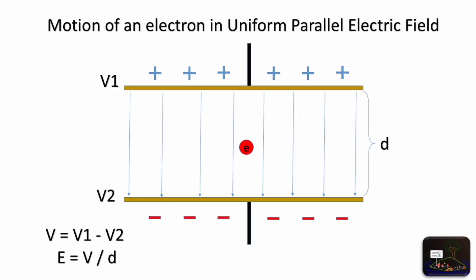First case: uniform parallel electric field. A uniform parallel electric field is created using two metallic parallel plates kept at two potentials V1 and V2 at a distance d from each other.